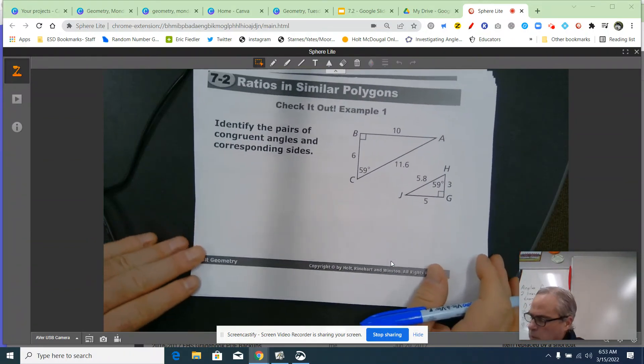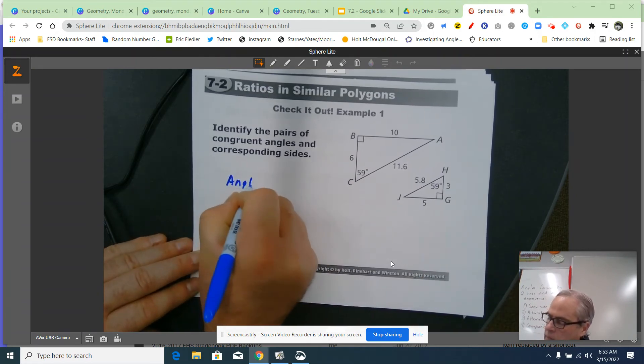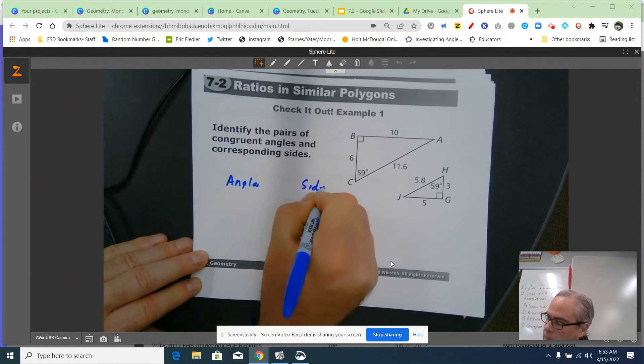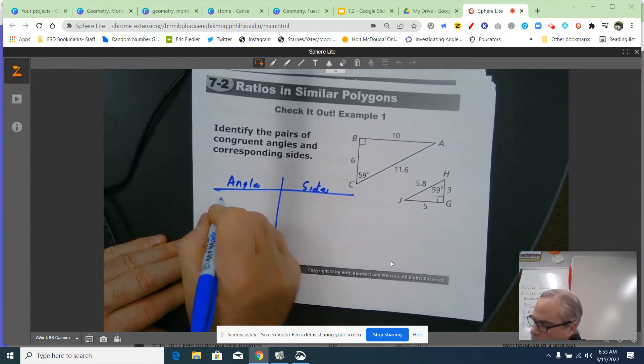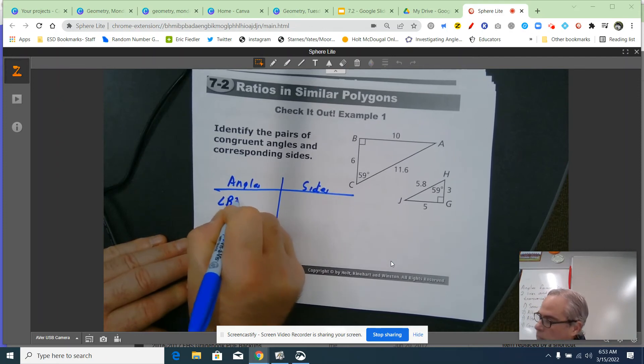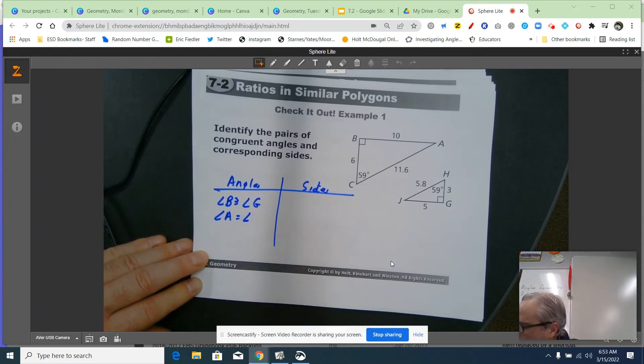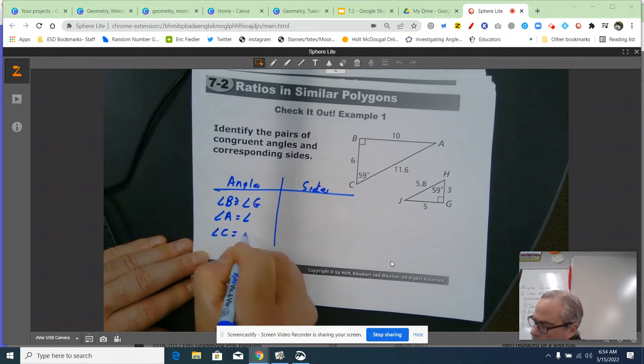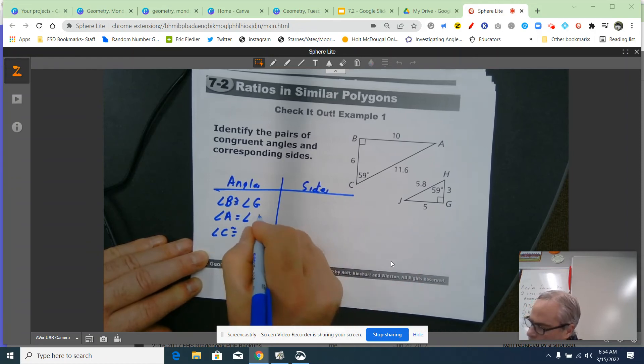Let's do one more real quick. So, identify the congruent angles and corresponding sides. Angle B is congruent to angle G. Angle A is congruent to angle, well, what is A congruent to? I'm going to skip that one and go to angle C. It is congruent to angle, it's 59, and H is 59. So, therefore, the last one has to be J.